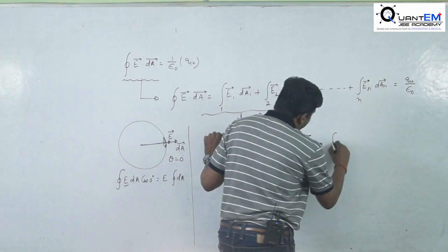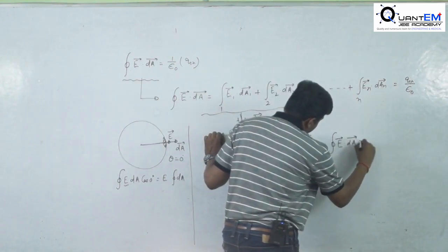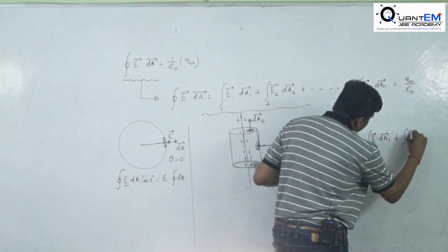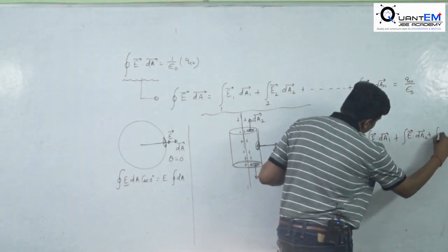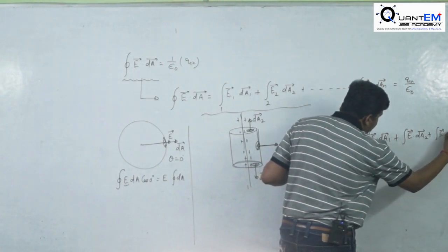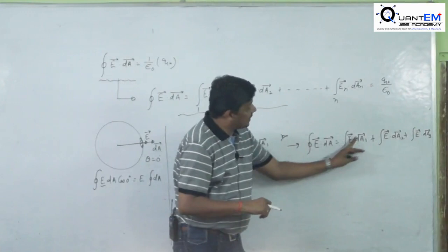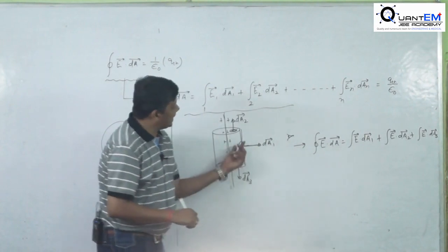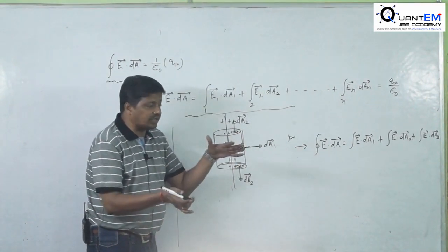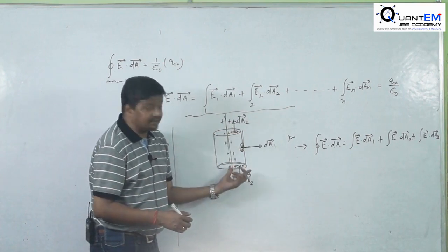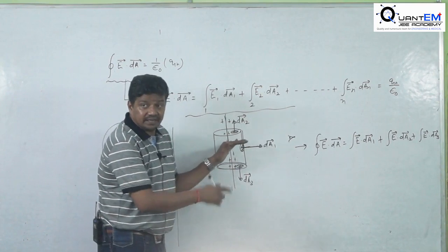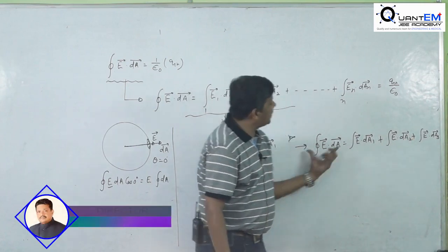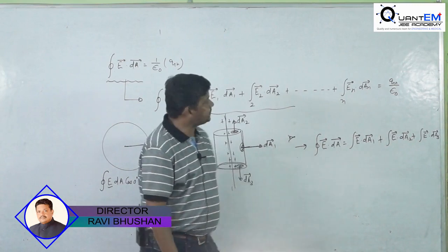So here E·dA must be broken into three parts: E·dA1 + E·dA2 + E·dA3. Note that dA1 alone is not a closed surface, nor is dA2 or dA3 individually — all three together form the closed surface. So you must divide it into three parts, but don't use the closed surface integral sign for each individually. All three combined give our integral over the closed surface.